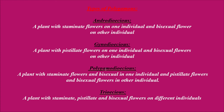Next is polygamodioecious: a plant where one individual of a species bears staminate flowers and bisexual flowers, and another individual of the same species bears pistillate flowers and bisexual flowers. That plant is referred to as polygamodioecious. Finally, trioecious: if a plant species possesses staminate flowers, pistillate flowers, and bisexual flowers each on different individuals of the same species, that plant species is referred to as trioecious.